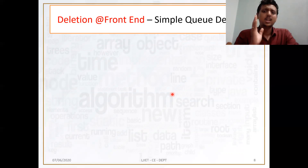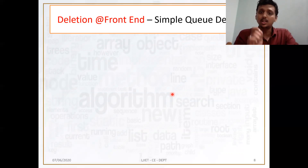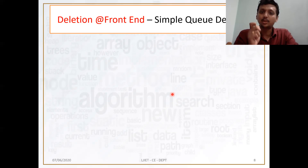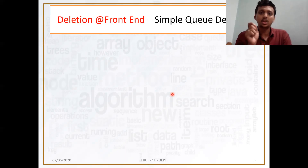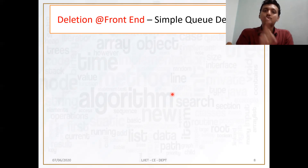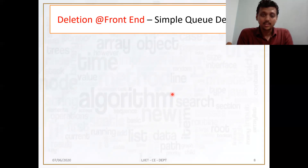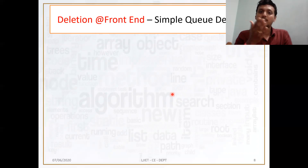In general, if my data structure has enough elements to delete, it means it is not underflow. But if my queue is underflow, it means there are no elements in the queue, and I am not able to delete anything. So first we check whether the queue is empty or not. First we check whether my front pointer is pointing to 0 or not. If my front pointer is pointing to 0, that means my queue is empty.